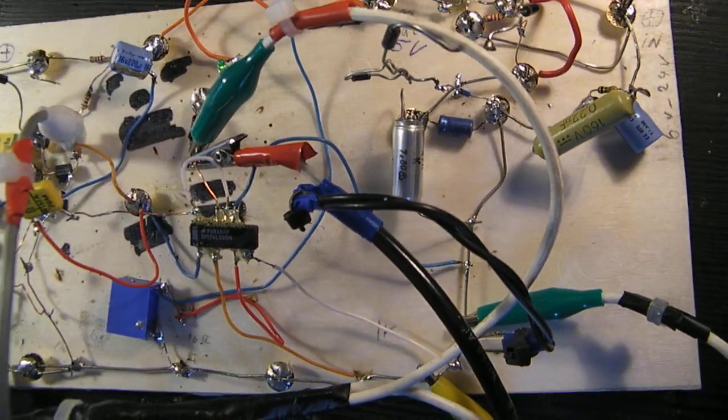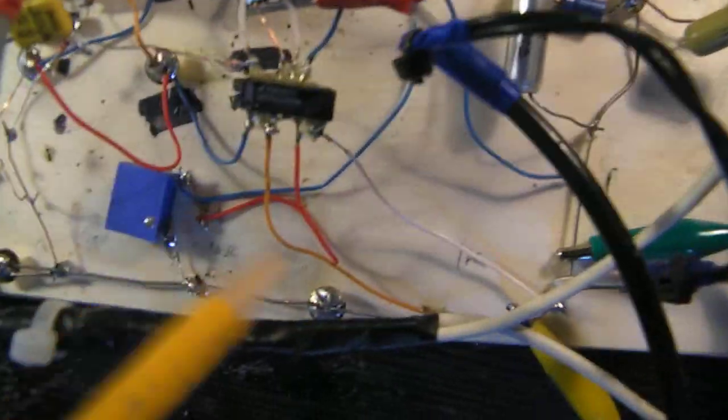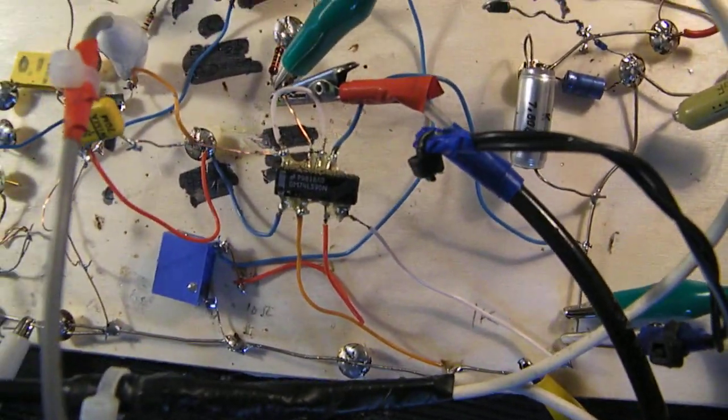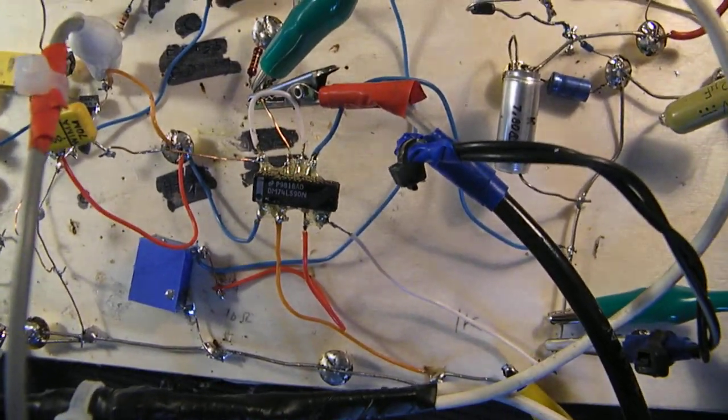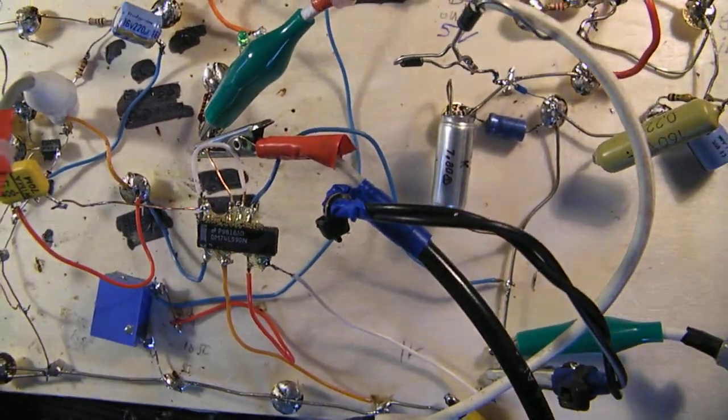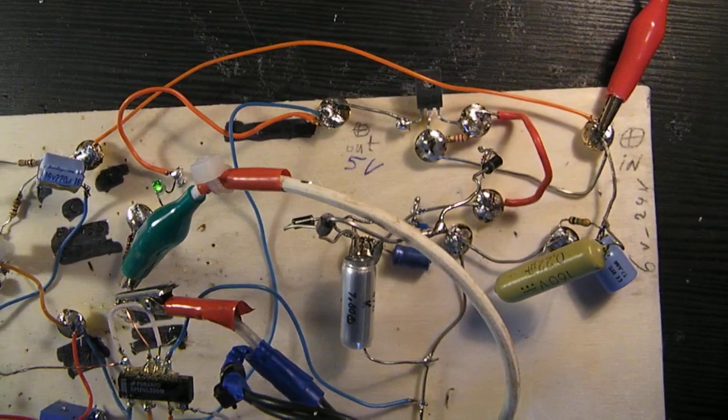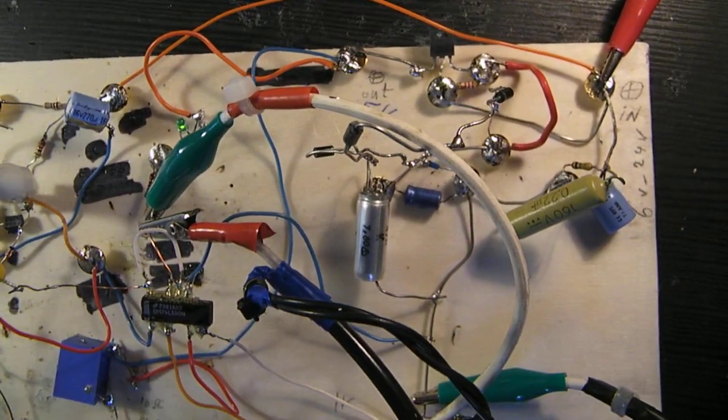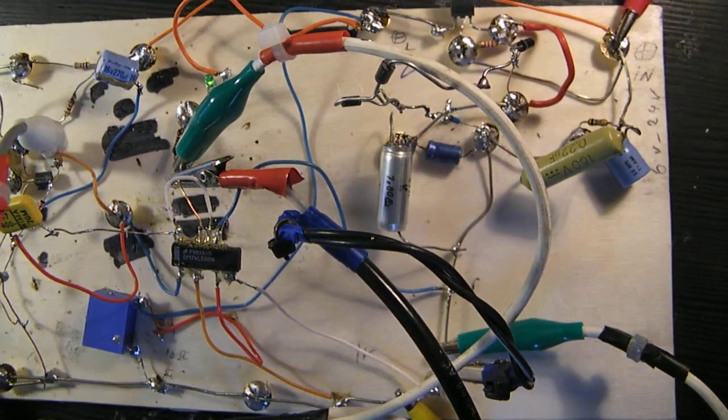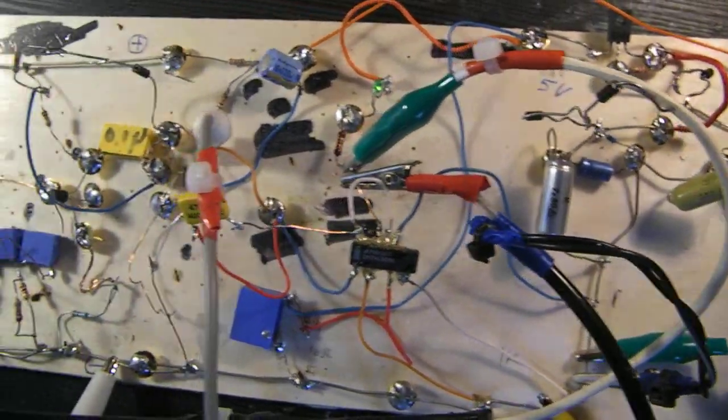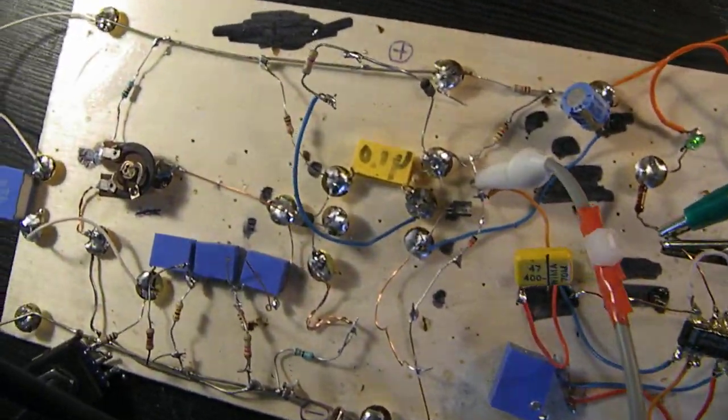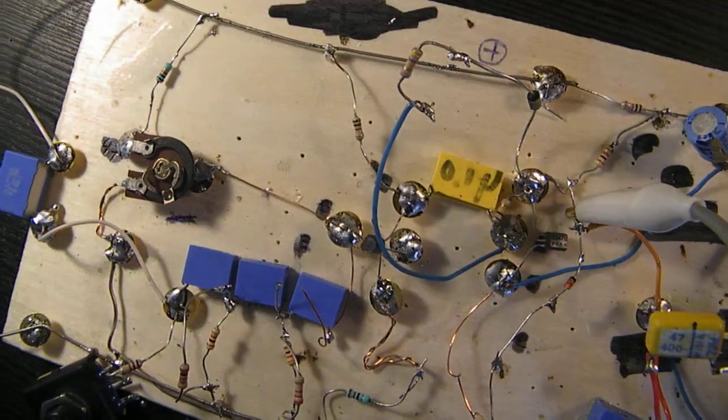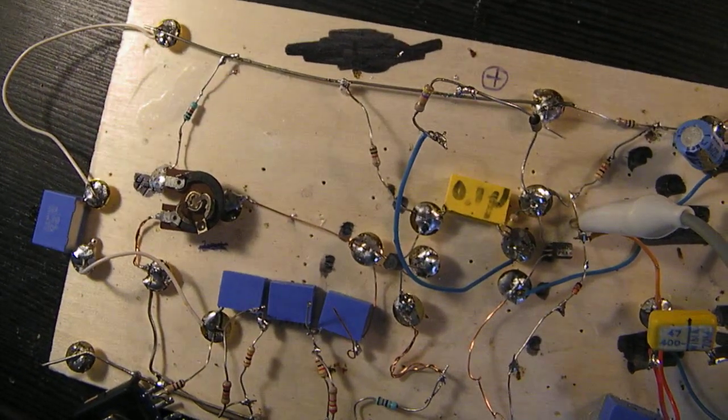Perhaps you can also use to get 5 volts for this chip 7805. I did not do that experiment. I found that 7805 sometimes doesn't work. That's the reason why I used a classical series regulator.